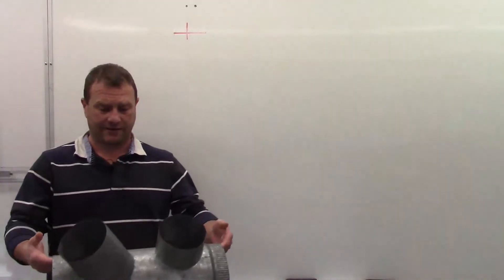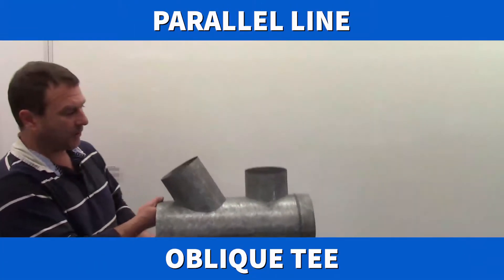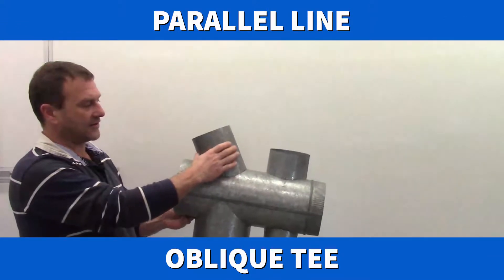Okay, we're going to have a look at our last tee in the series here. And the one we're going to look at today is an on-center oblique tee.